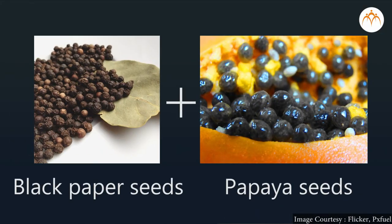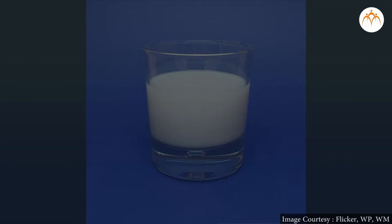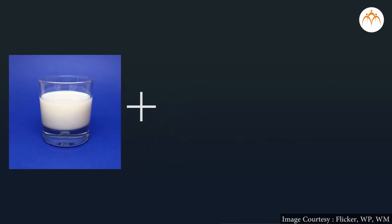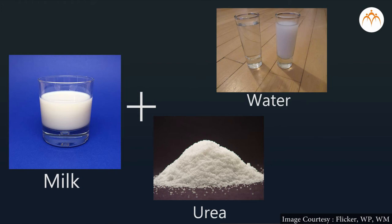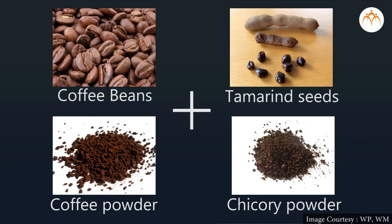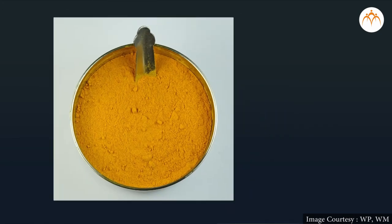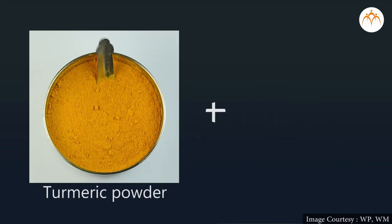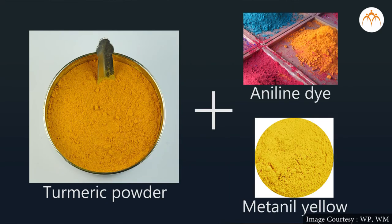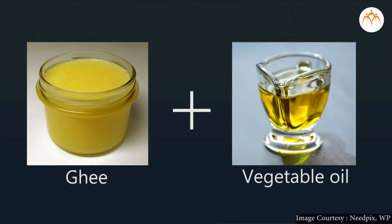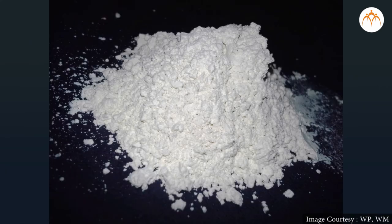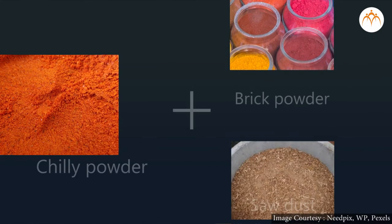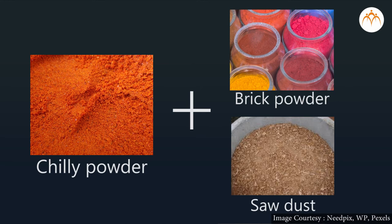Now I will give you some common examples of food adulteration. Black pepper seeds are mixed with papaya seeds. In our country, milk is often adulterated by adding water, urea, detergent, etc. Coffee powder is adulterated by adding tamarind seeds, chicory powder, etc. One may find turmeric powder adulterated with aniline dye or metanil yellow. We may find vegetable oil or animal fats in ghee. Chalk powder is added to sugar. Brick powder or sawdust is added to chilli powder, and many more.